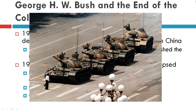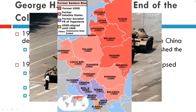The iconic tank man stood in front of a line of Chinese tanks, and at one point climbed on top and said something down into the turret. He eventually was pulled away as he refused to move. Here are images of those Eastern European revolutions.